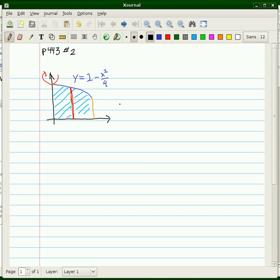Once again, to do the method of shells, we simply need to evaluate the integral of 2π times the radius, which is x, times the height, which is the top function minus the bottom function.